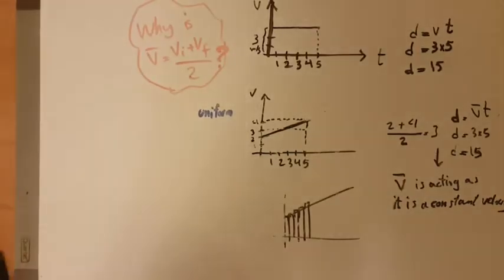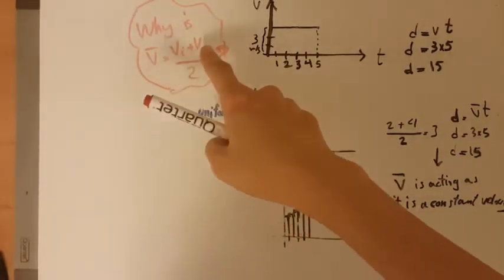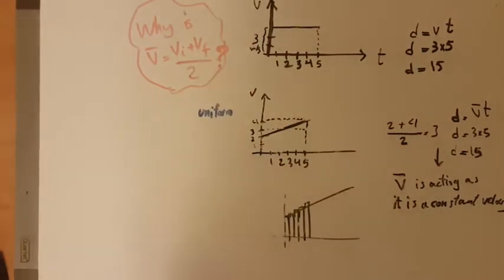Okay everyone, why is V average equal to the addition of V initial plus V final divided by 2?